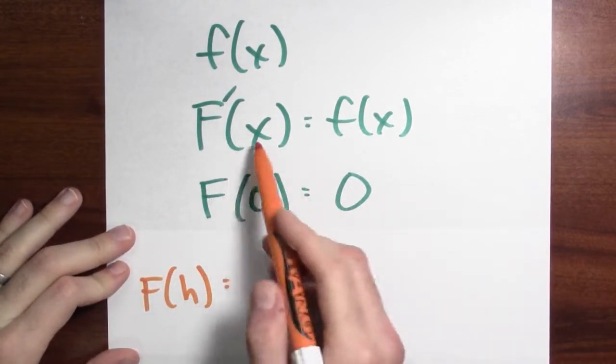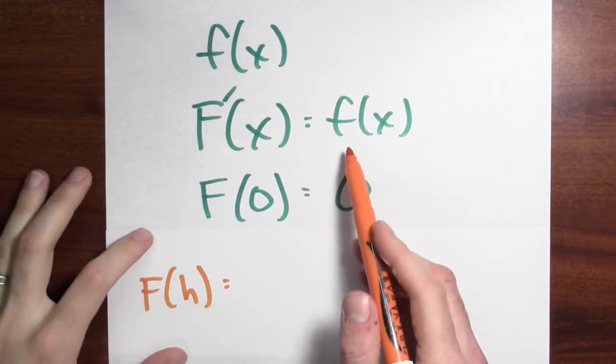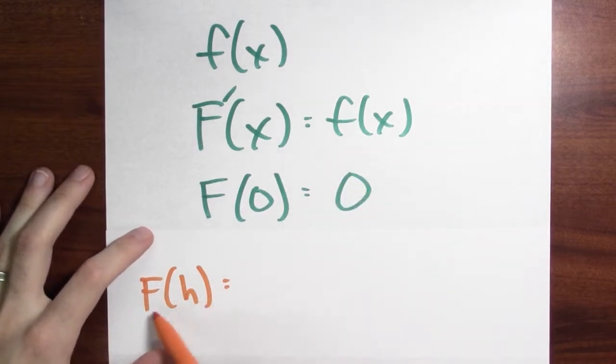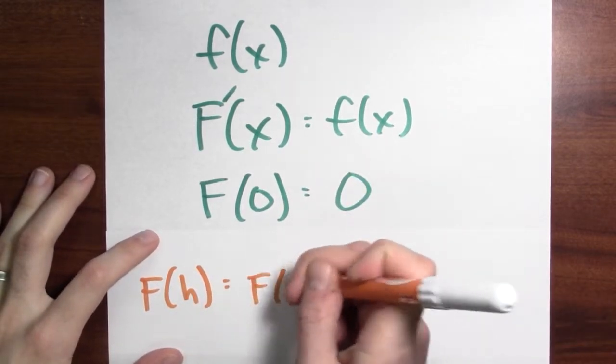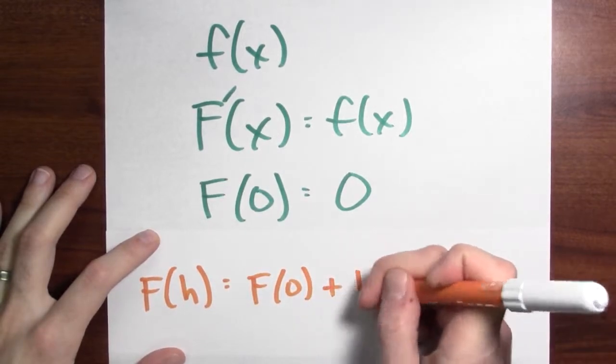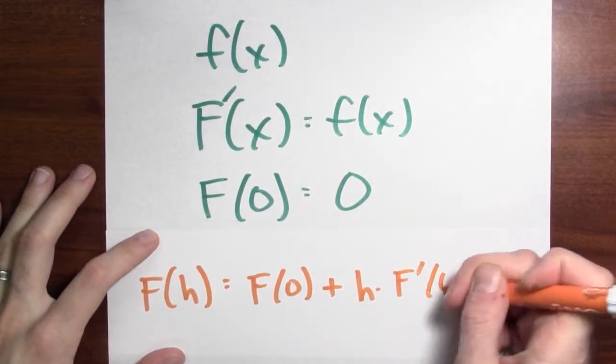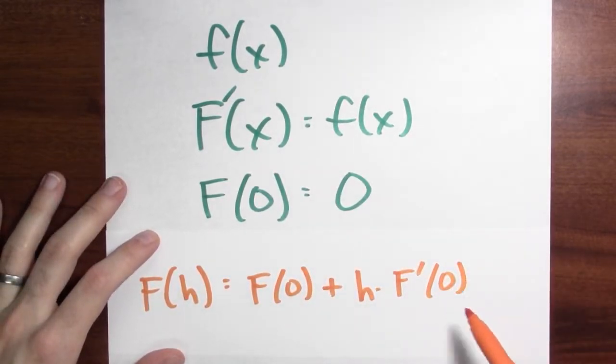Well, what do I know about big F? Big F's derivative is little f. So my approximation for big F at h is the value of big F at 0 plus h times the derivative of big F at 0.